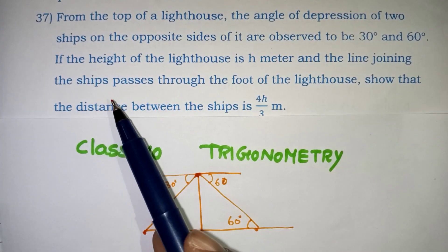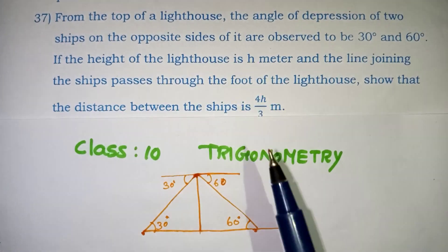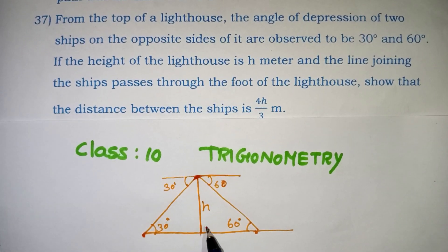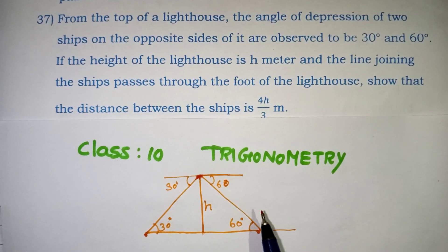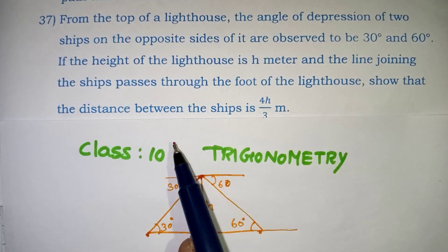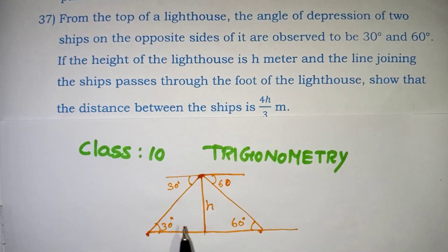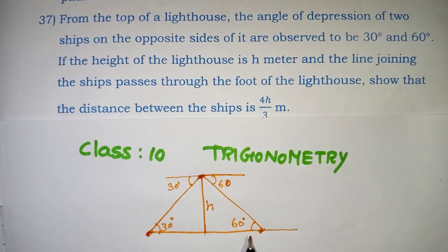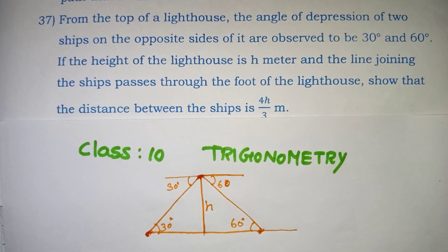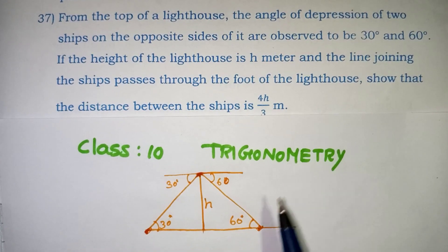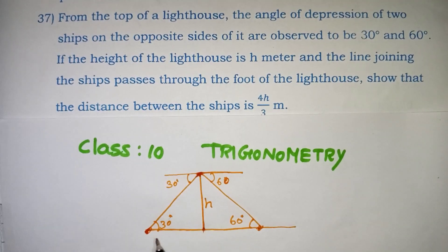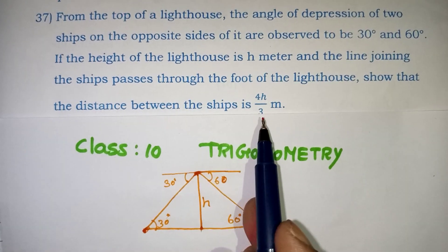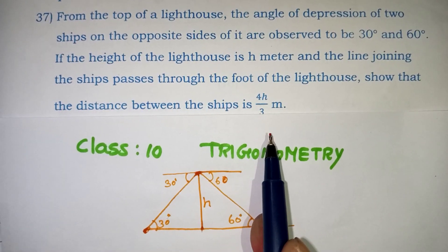If the height of the lighthouse is h meters, and the line joining the ships passes through the foot of the lighthouse, then the distance between the ships is 4h by root 3 meters. Let's prove it.